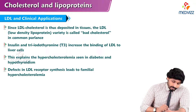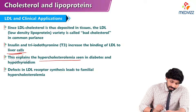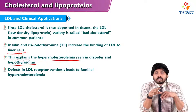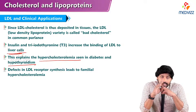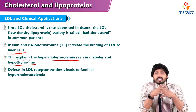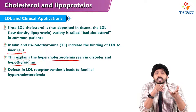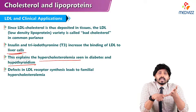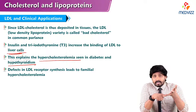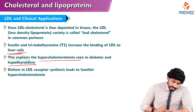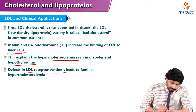Insulin and thyroid hormone increase the binding of LDL to liver cells. This explains hypercholesterolemia seen in diabetes and hypothyroidism, because insulin pushes LDL to get back to the liver. In case of hypothyroidism or insulin deficiency, as in diabetes, the person can develop a hypercholesterolemia condition. Defect in LDL receptor synthesis is called familial hypercholesterolemia.